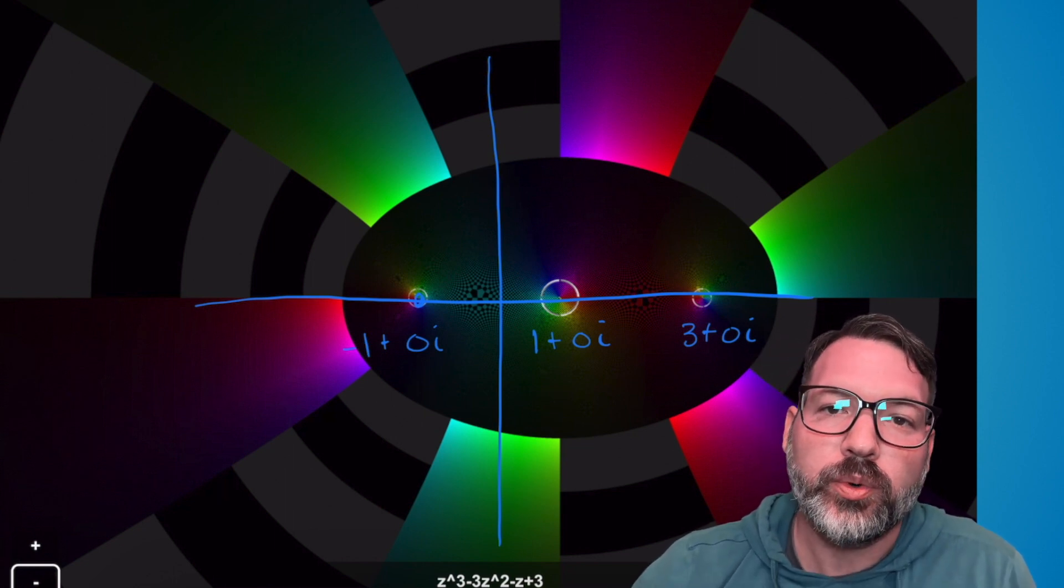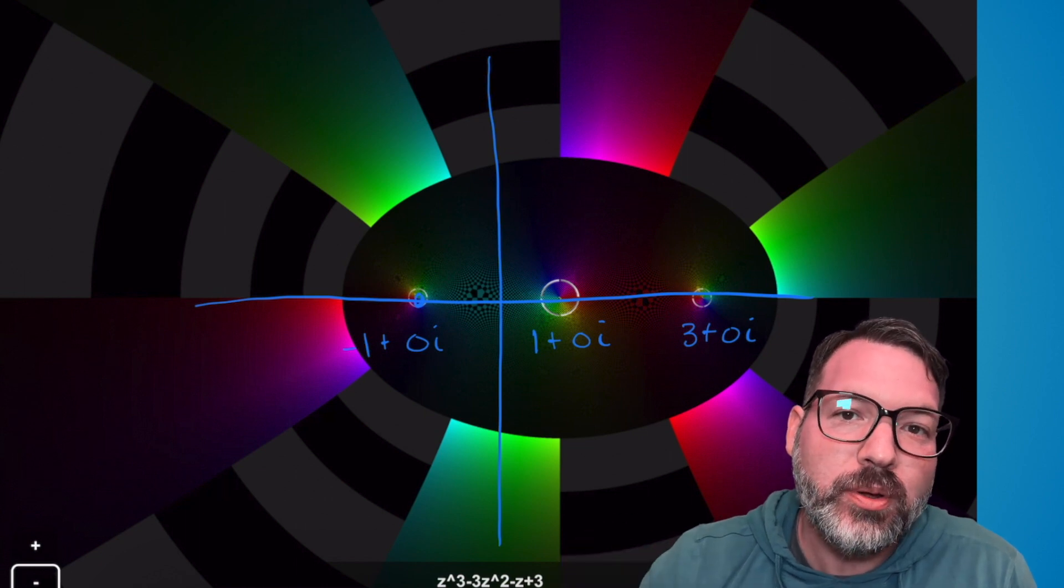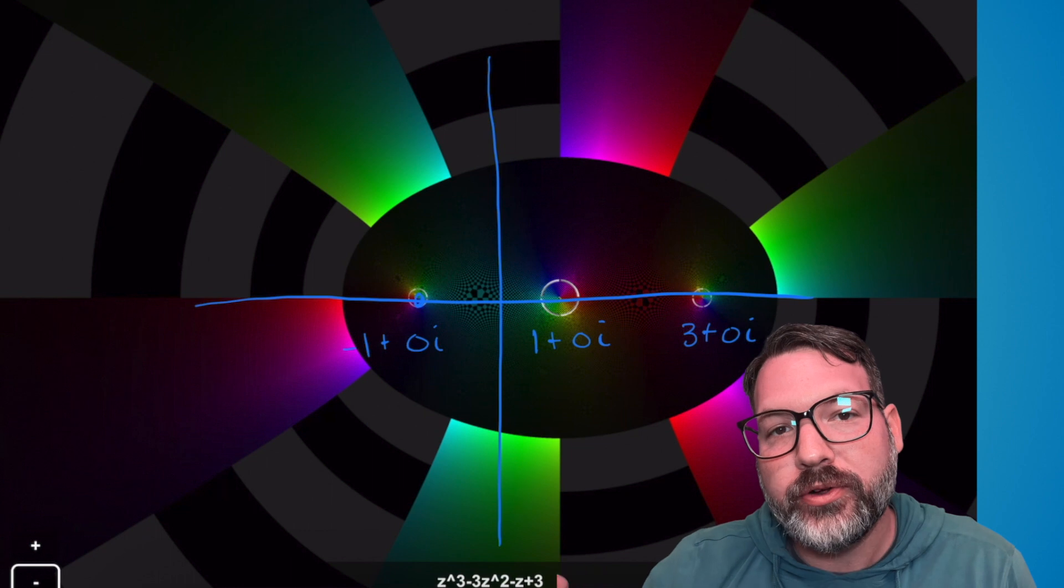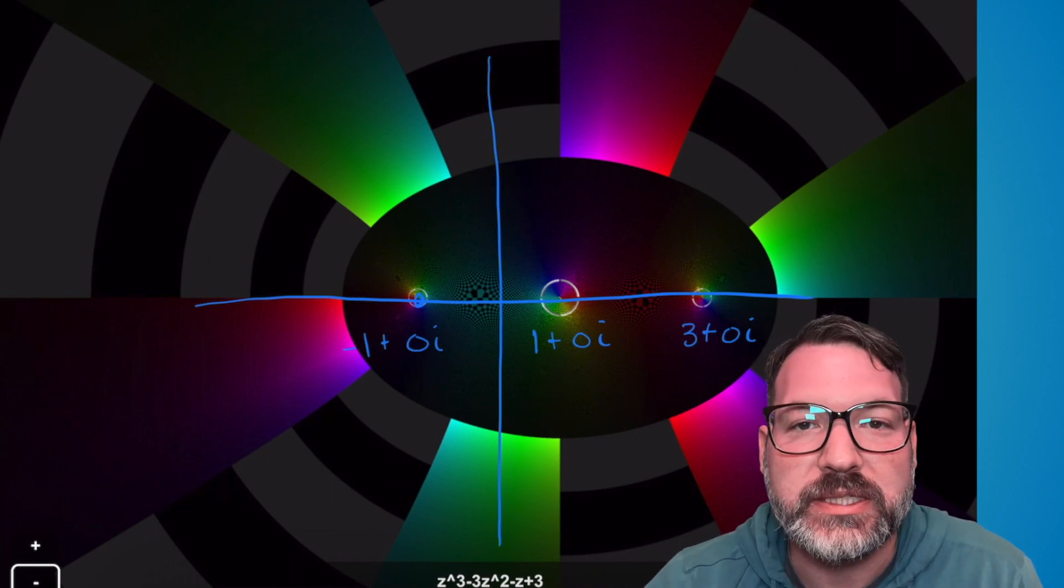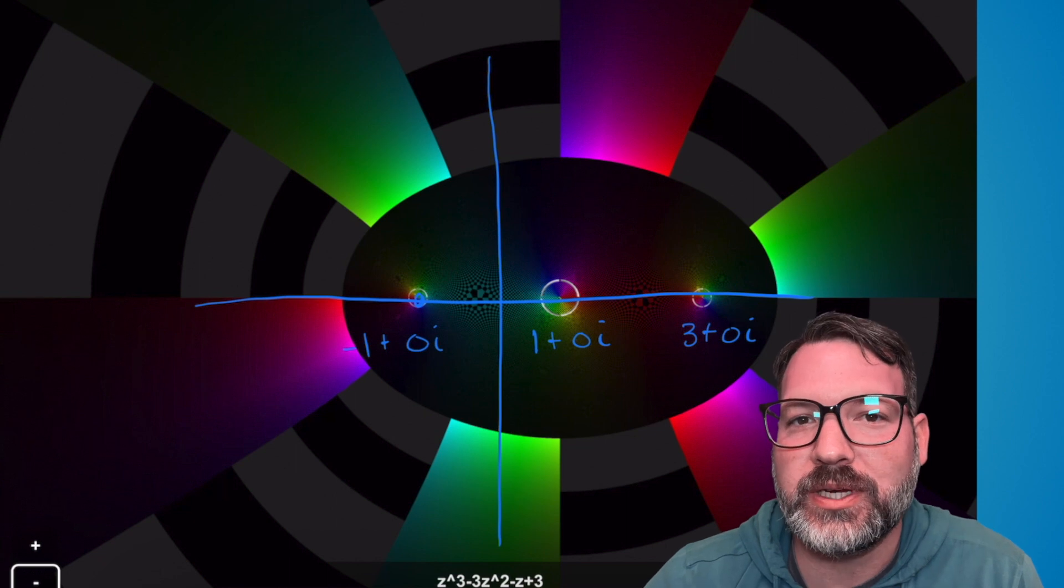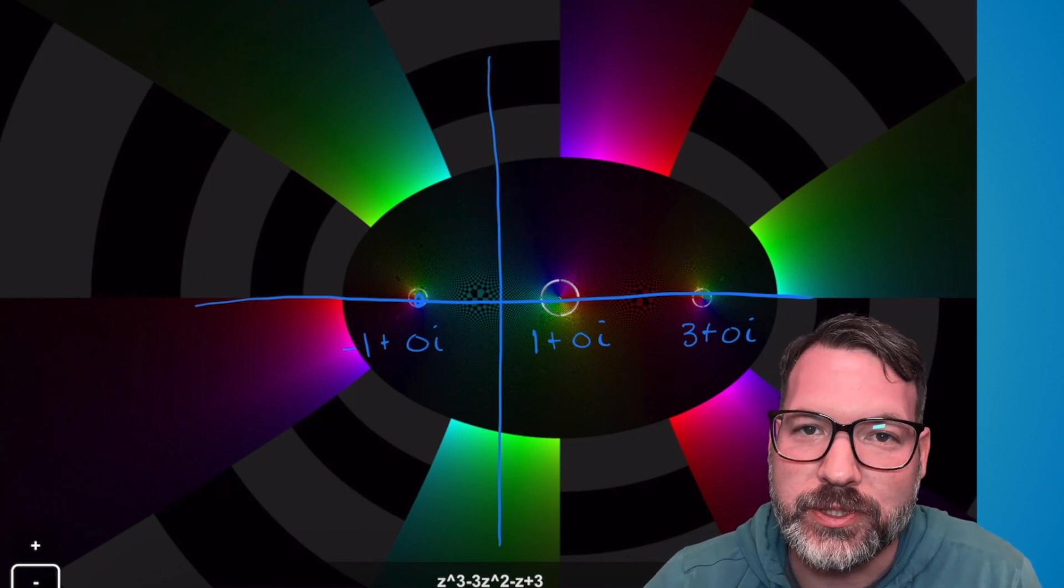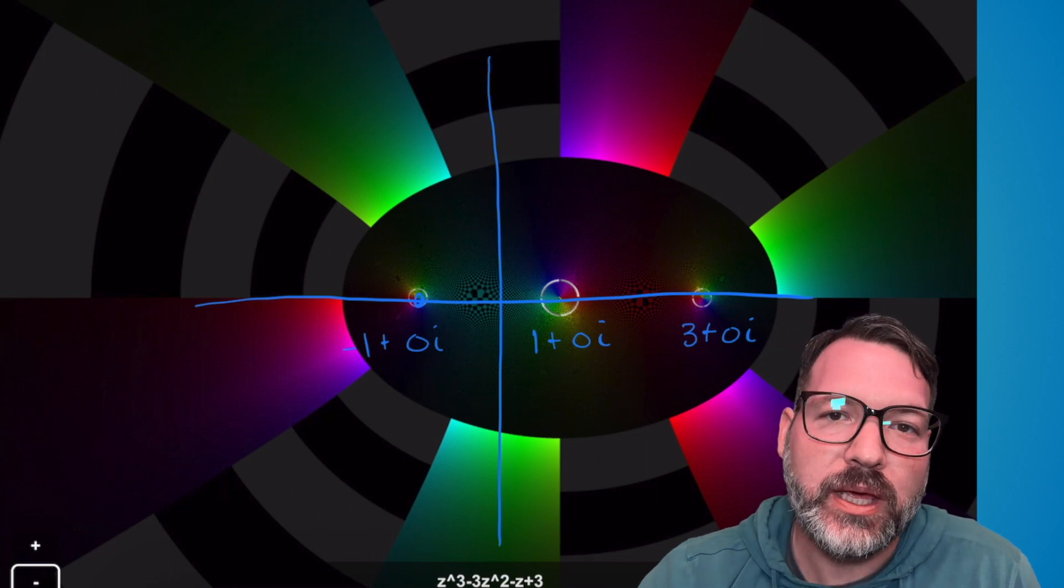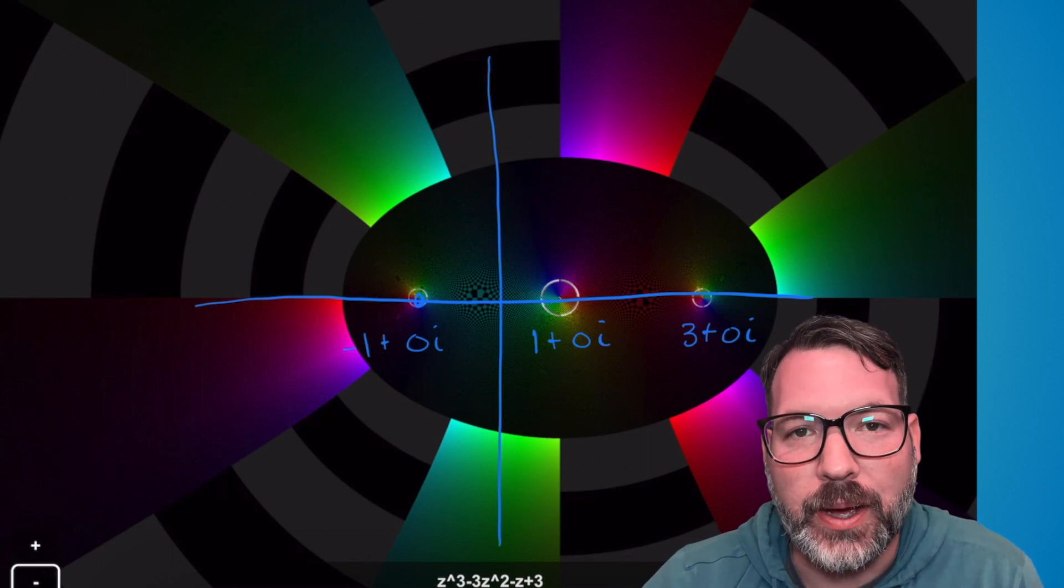Over the complex numbers, we're relating what is essentially a two-dimensional number a plus bi as our input to another two-dimensional number c plus di as the output. But if you have two two-dimensional numbers, that means you would need four dimensions to visualize what's going on. So it's a lot harder to visualize these functions as we input and output complex numbers.